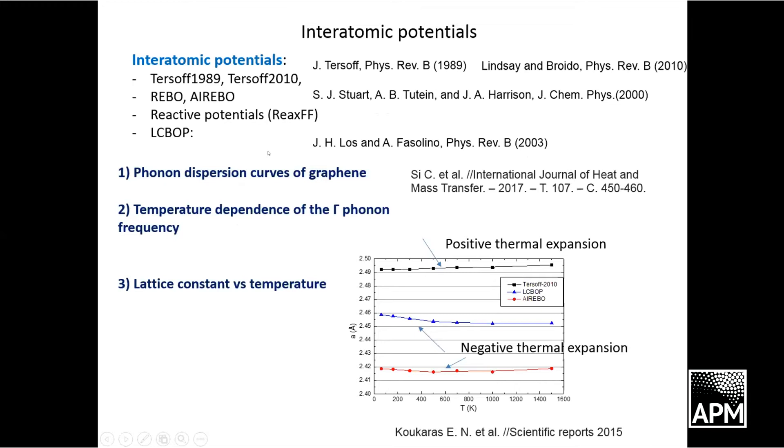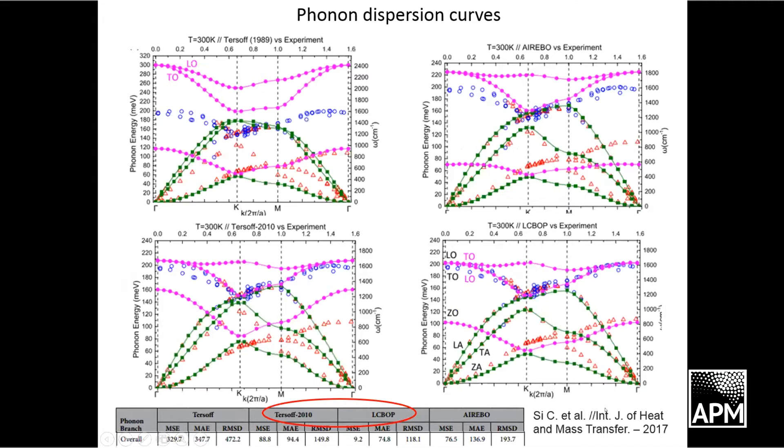There are plenty of interatomic potentials for graphene. In my work, I'll use these two: Tersoff potentials and LCBOP potentials. Those potentials could be compared by calculating dispersion curves, temperature dependence on G point frequency, and how lattice constant depends on temperature. All these potentials give quite good results, but in a paper in the International Journal of Heat and Mass Transfer, it was shown that these two potentials are good compared to all the others.